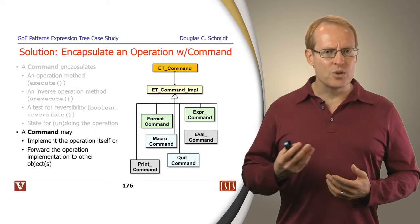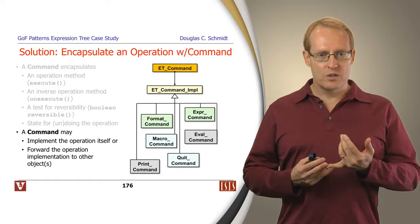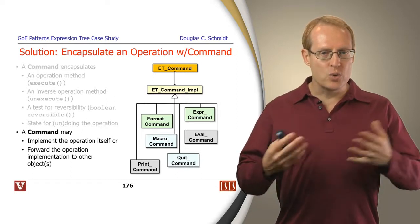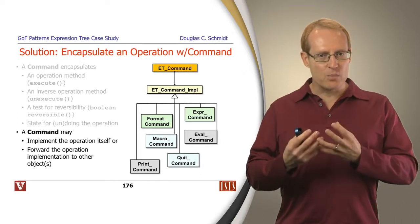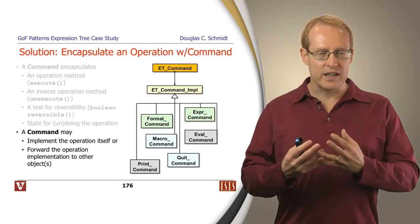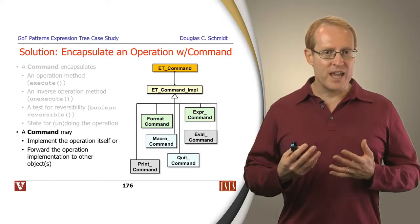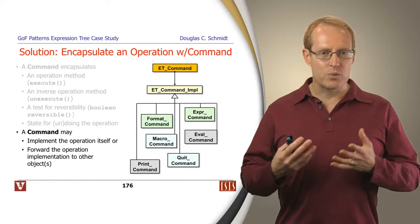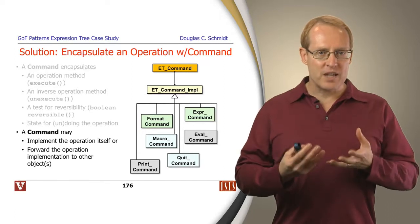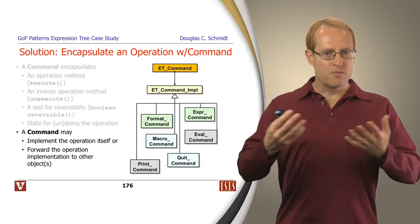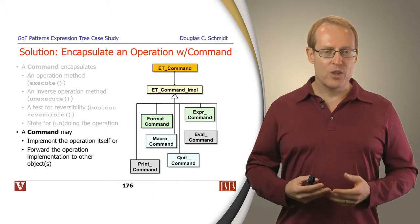There are a number of different ways to implement this. One approach — often used when starting with a new design using the command-like approach — is to have the command execute method do the work itself directly. Another way, often used when taking legacy code developed without a centralized command model, is to have the command's execute method forward to a number of other objects in order to do the work, which may be scattered throughout the code.